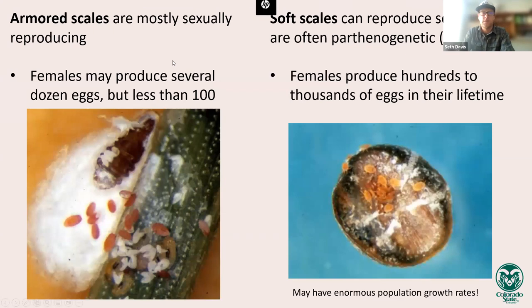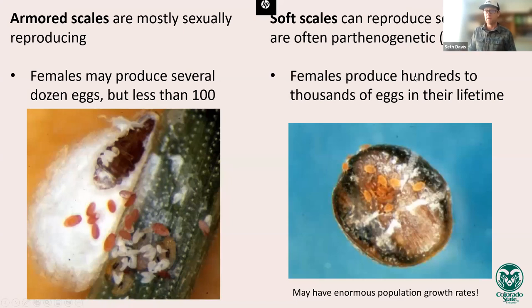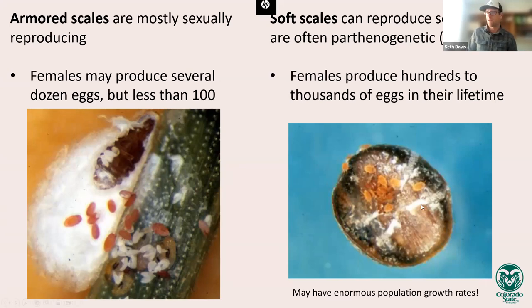Armored scales tend to reproduce almost exclusively sexually. A typical female produces around a dozen to a hundred eggs in her lifetime. Soft scales can be both sexual or parthenogenetic — meaning they can be clonal — so a female can produce hundreds to even thousands of eggs, or give birth to hundreds of offspring viviparously. This can create enormous population growth rates, making soft scales potentially more difficult to control than armored scales due to their ability to completely take over a host plant.